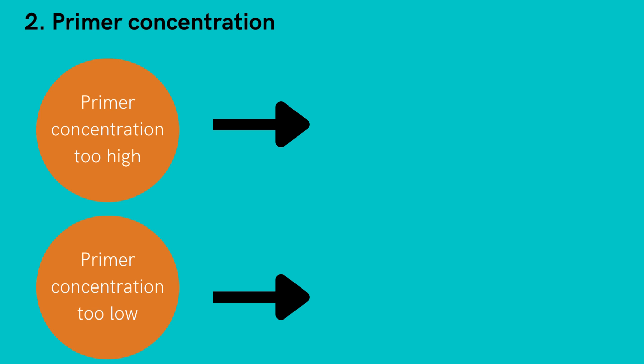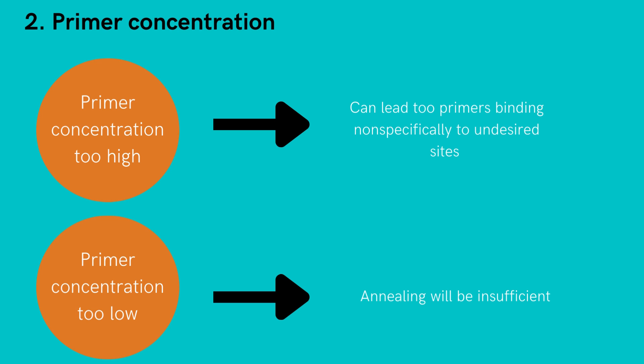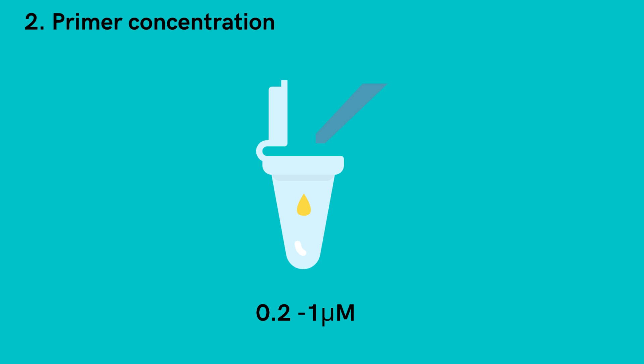Next, primer concentration also leads to weak or faint bands. If the primer concentration is too high, this leads to primers binding nonspecifically to undesired sites on the template or to each other. And if primer concentration is too low, this can lead to insufficient annealing. In order to combat this, well-designed primers are at a concentration of 0.2 to 1 µM. Also, it is important to make sure that correct concentrations are supplied by the manufacturer.